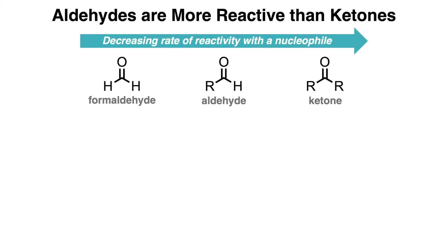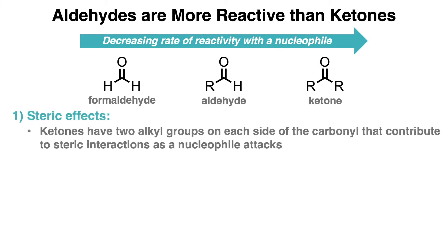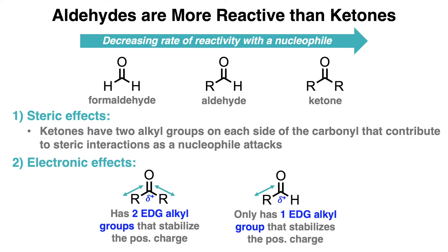Aldehydes generally are more reactive than ketones for two reasons. Ketones have two alkyl groups on each side of the carbonyl that can contribute to steric interactions as the nucleophile attacks. The steric interactions destabilize the transition state of a nucleophilic attack because it's more crowded. On the other hand, aldehydes only have one alkyl group, so the transition state is less crowded and lower in energy. Formaldehyde is even more reactive than an aldehyde since the carbonyl is only attached to much smaller hydrogen atoms.